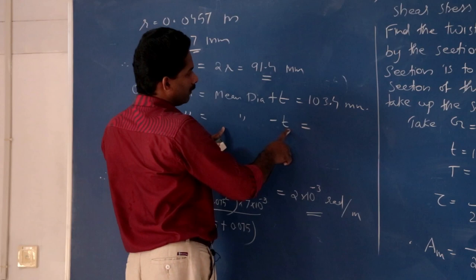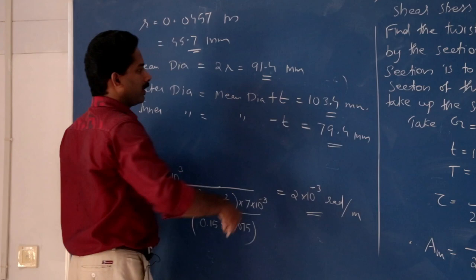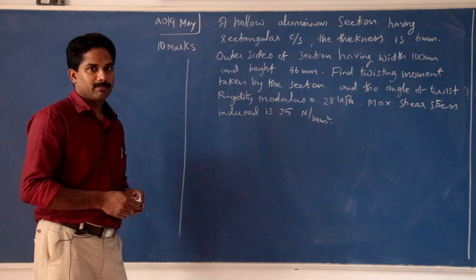You get: outer diameter equals mean diameter plus T, so 91.4 plus 12 mm gives 103.4 mm; inner diameter is 91.4 minus 12 mm gives 79.4 mm. So these are the required dimensions for the hollow circular shaft.